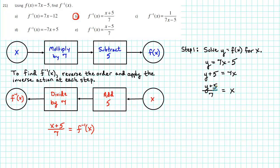The next step is to interchange the x and y. When we do, we get x plus 5 over 7 is equal to y.